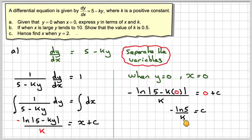Putting that back into my equation, my equation now becomes minus ln of 5 minus ky over k equals x minus ln of 5 over k.